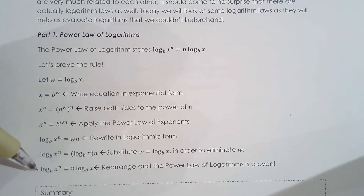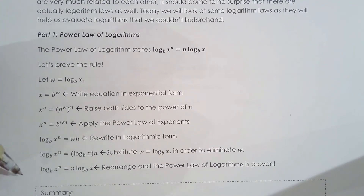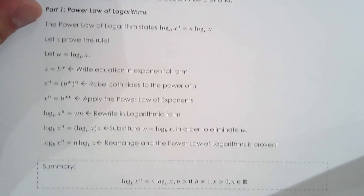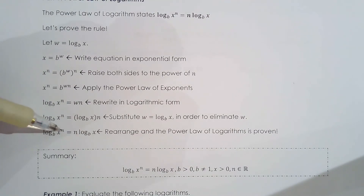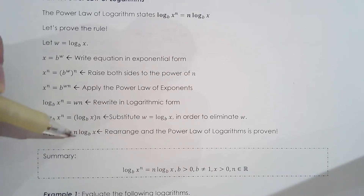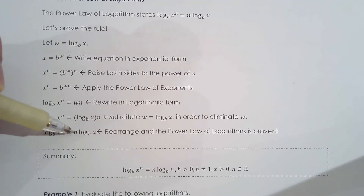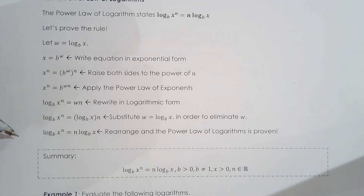I really want you to look at the power law of logarithms and see how it's related to the power law of exponents. The power law of exponents says when you have a power of a power, you multiply the exponents. This is basically saying the same thing — when you have x to the power of n, you move n to the front as a constant multiple. A logarithm is quite simply an exponent, so you're really just multiplying the exponents here.